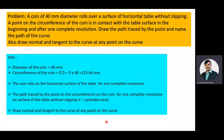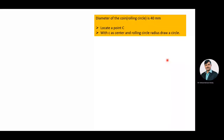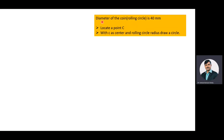Now we will enter into the construction of the cycloidal curve, after which we will draw the normal and tangent at any point. The diameter of the rolling circle is 40 mm. Locate a point C, then with C as center and rolling circle radius of 20 mm, draw one circle — that is the rolling circle.